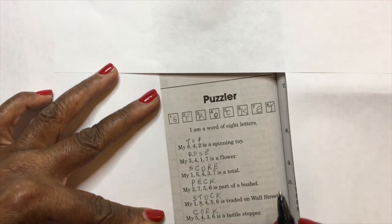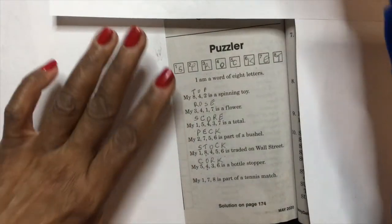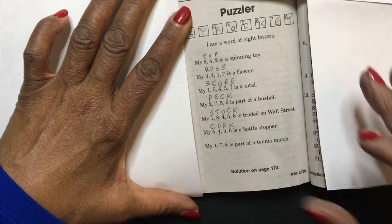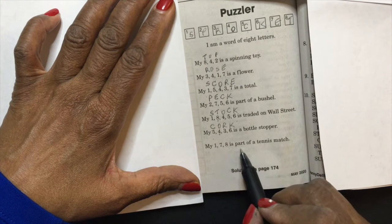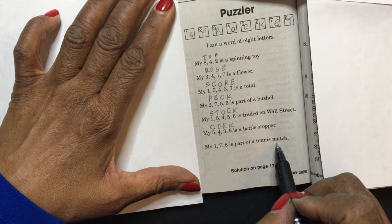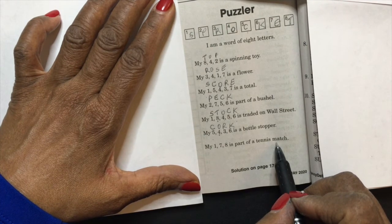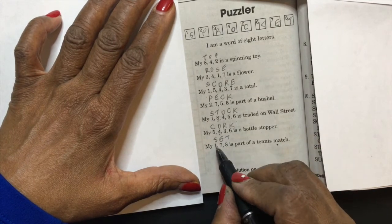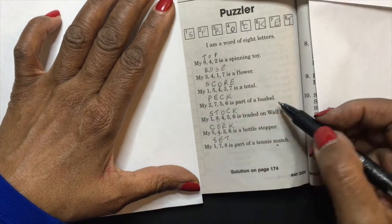right. And then let's make sure you can see at the bottom here: 'my one, seven, eight is part of a tennis match.' Part of a tennis match? A set—that's what makes sense. One is an S, seven is an E, eight is a T. Okay, we